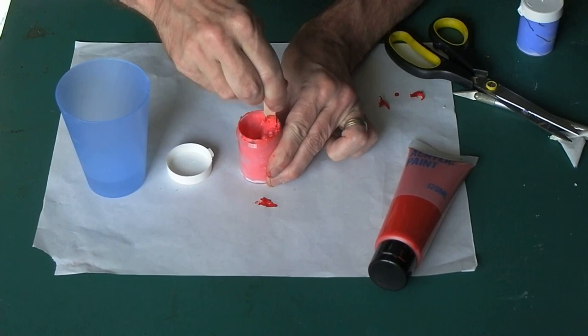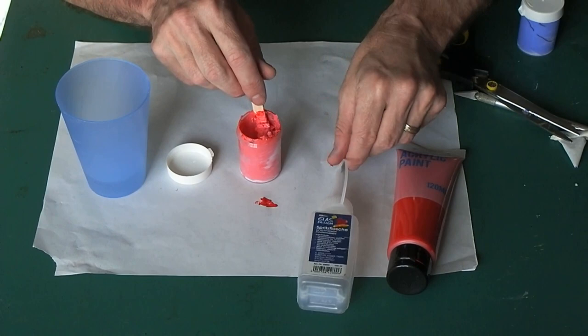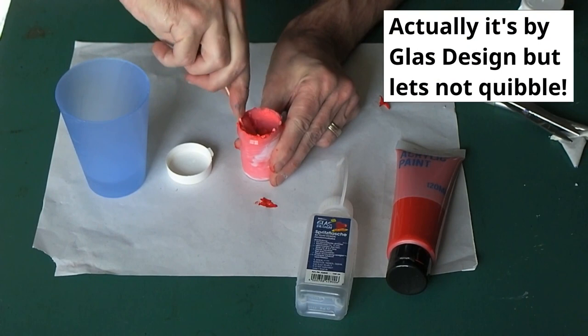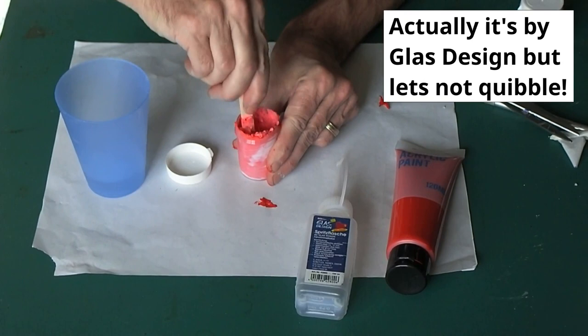If you don't like using a piping bag you can buy empty bottles which you can pipe from. This one's by Glass Art. Or we do have a video showing you how to make your piping bag and how to pipe out of it.